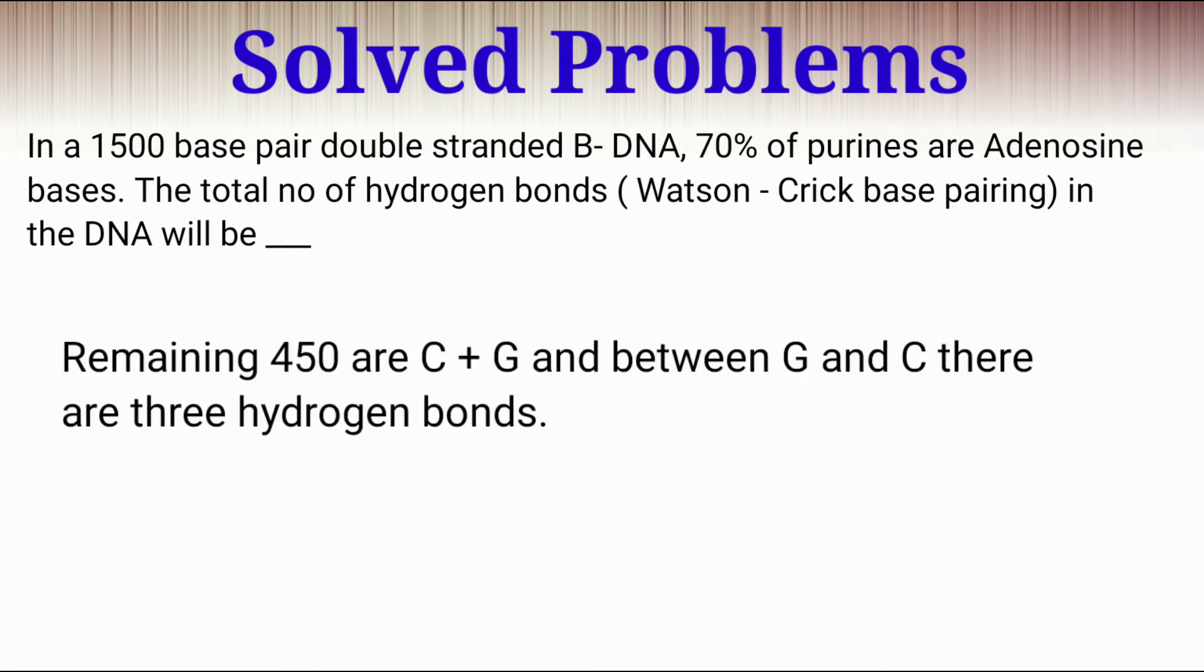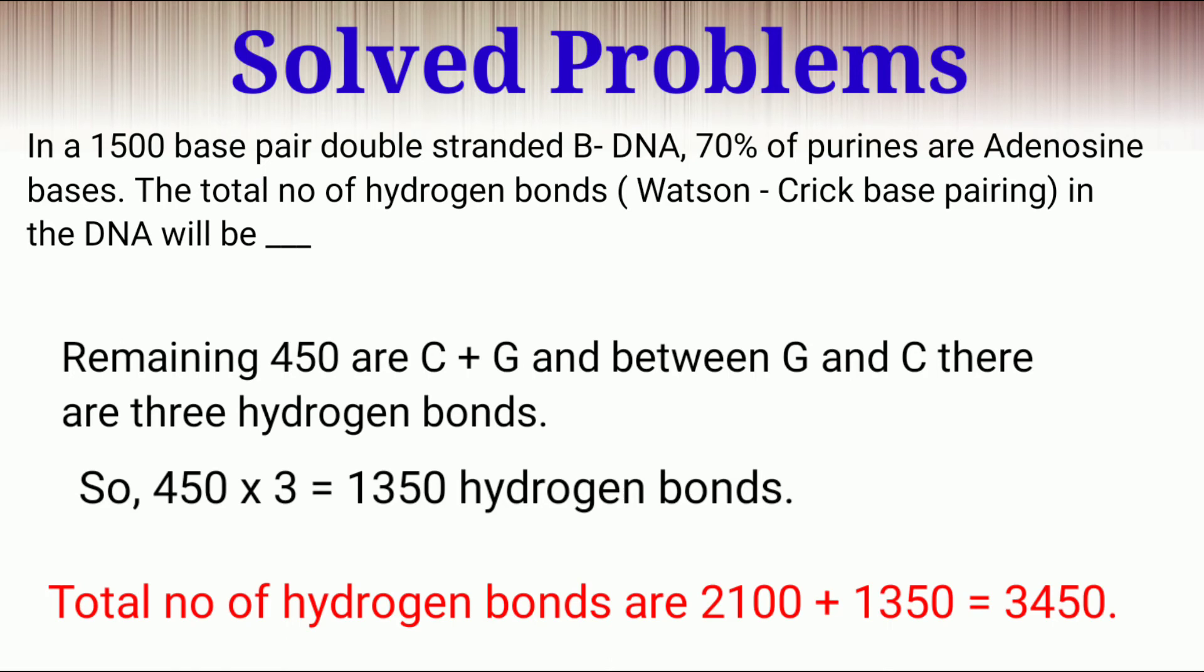And remaining 450 are guanosine plus cytosine. And in between guanosine and cytosine, there are three hydrogen bonds. So number of hydrogen bonds in guanosine plus cytosine is 1350. So total number of hydrogen bonds are 3450.